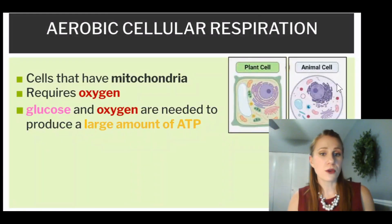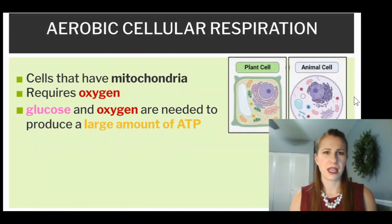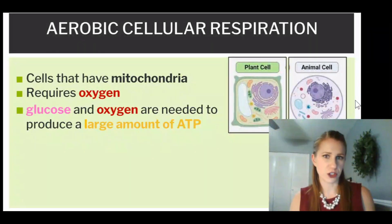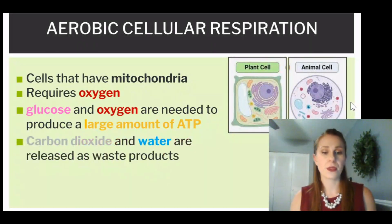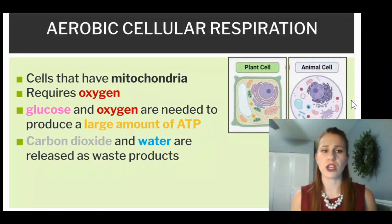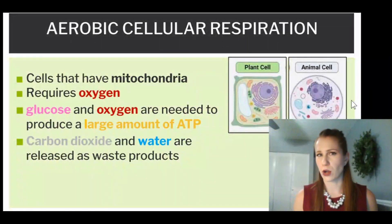We're also going to produce a large amount of ATP from aerobic respiration. This is the process our cells want to use if they're being most efficient. Our two waste products — and the products of our equation — are carbon dioxide and water.